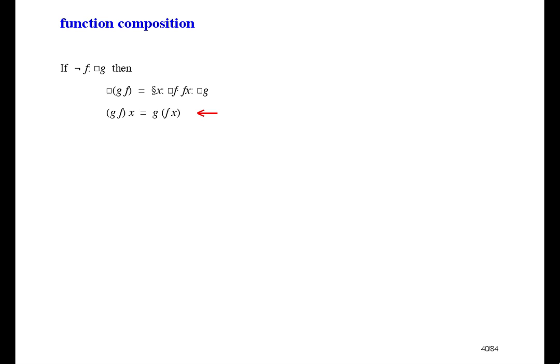Looking first at the result, applying gf to an argument x means applying f and then applying g to the result. It looks like an associative law. So the domain of gf is those things you can apply f to that result in things you can apply g to.